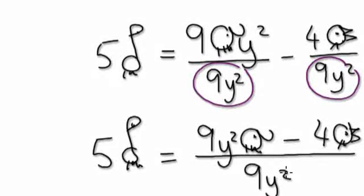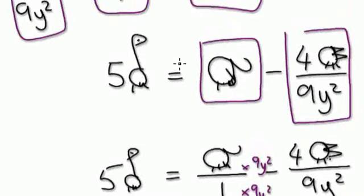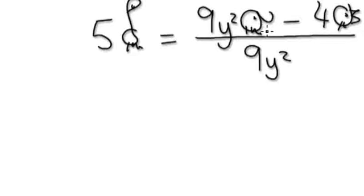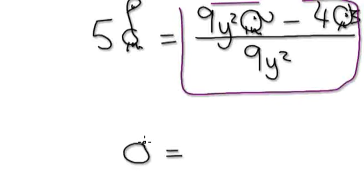Five giraffes equals this. Now we've got one bit here adding another bit here, so we want to merge the two together. Now it would be really easy to divide. Now that you've got one fraction here, in effect one fraction, we can divide both sides by five. So here you have a giraffe on its own. And when you divide by five, it gets multiplied to the bottom.